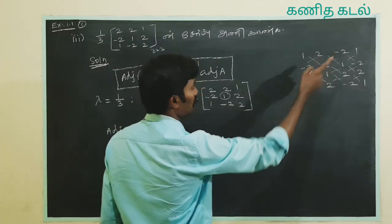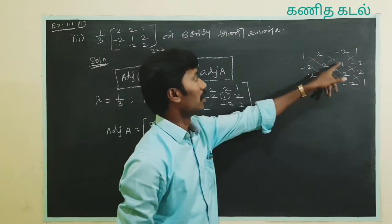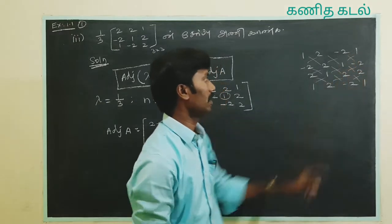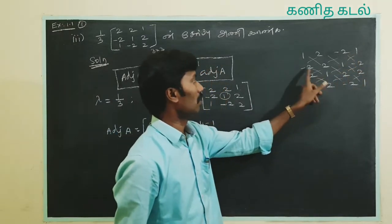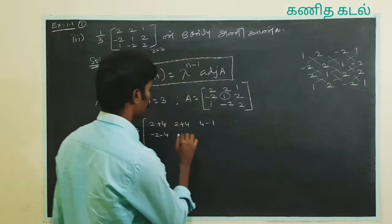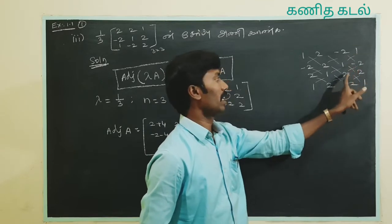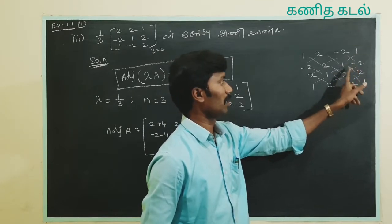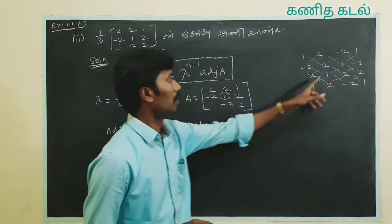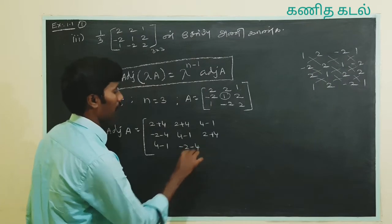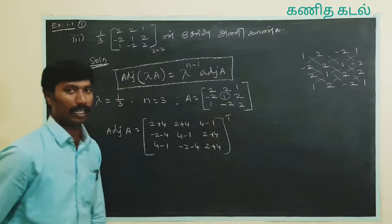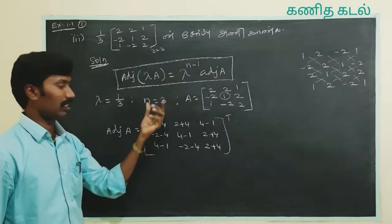We change the sign and minus — it's already minus 4. 6. 2 plus 4. 4. 4 minus 1. 6. Minus 2 minus 4. 4 minus 1. 2 plus 4. 2 plus 4. 4 minus 1. Minus 2 minus 4. 2 plus 4. 4 minus 1. Minus 2 minus 4.